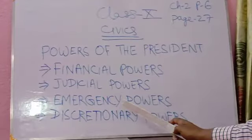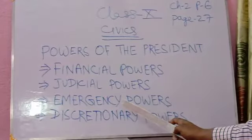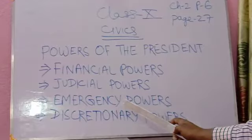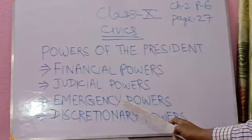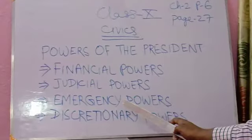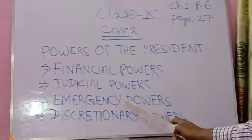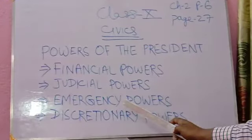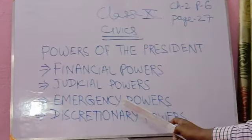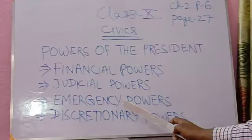The president can grant pardon in all court-martial cases. He can also grant pardon if the punishment is for violating a union law. Next, he can commute a death sentence to life imprisonment if the court has sentenced someone to death by the Supreme Court of India.